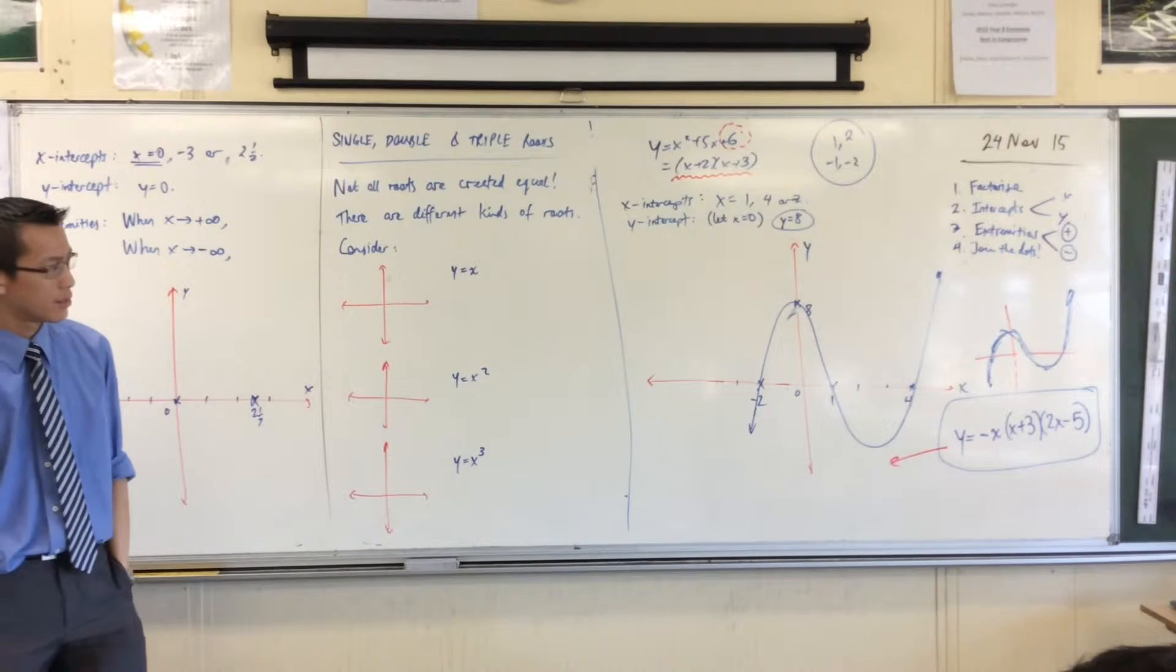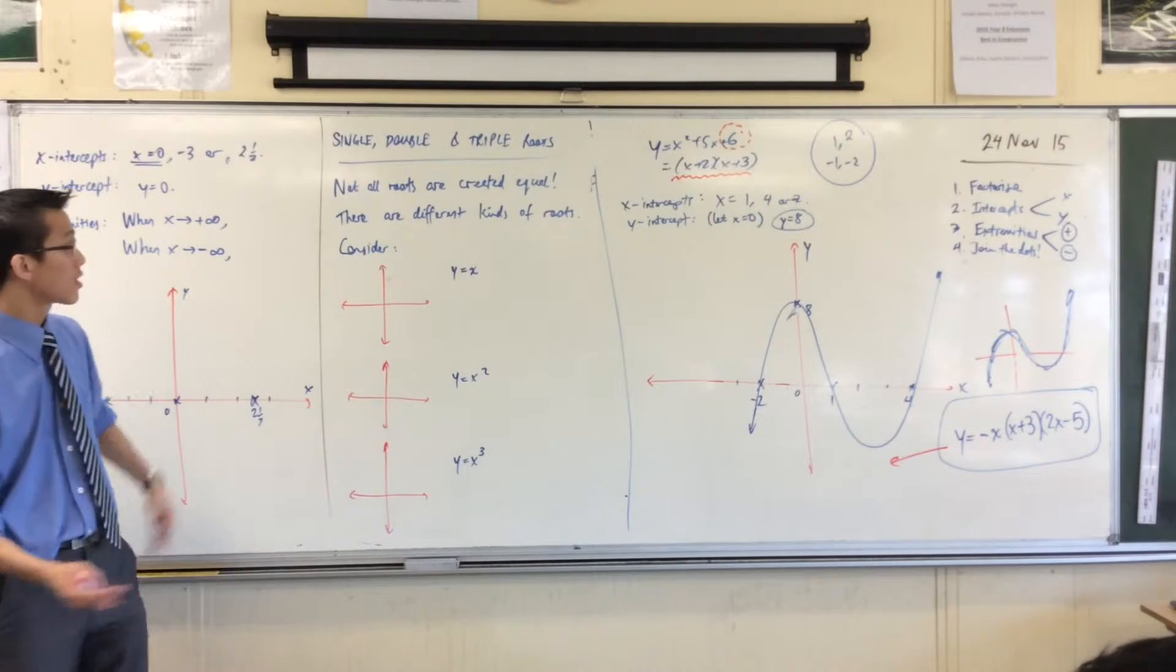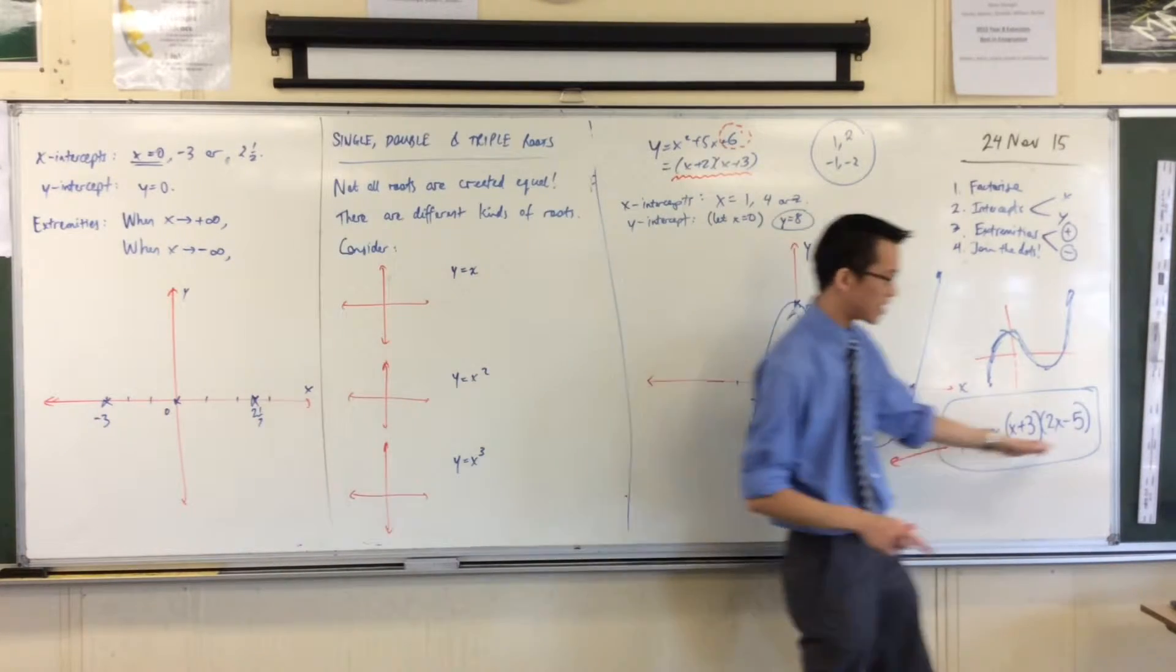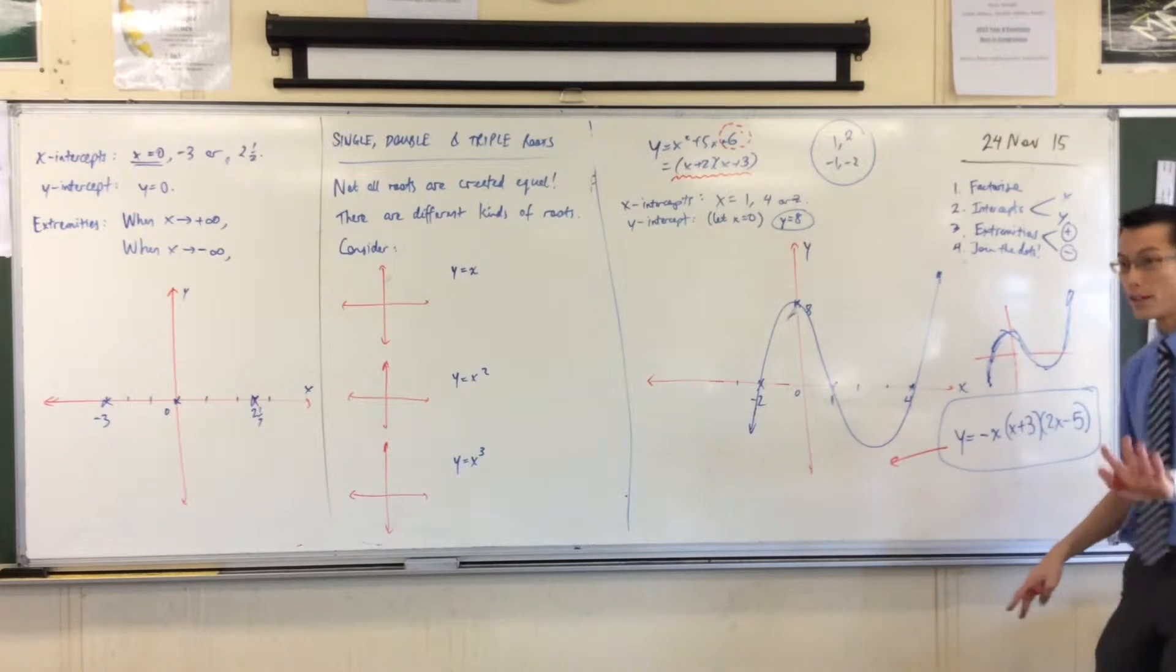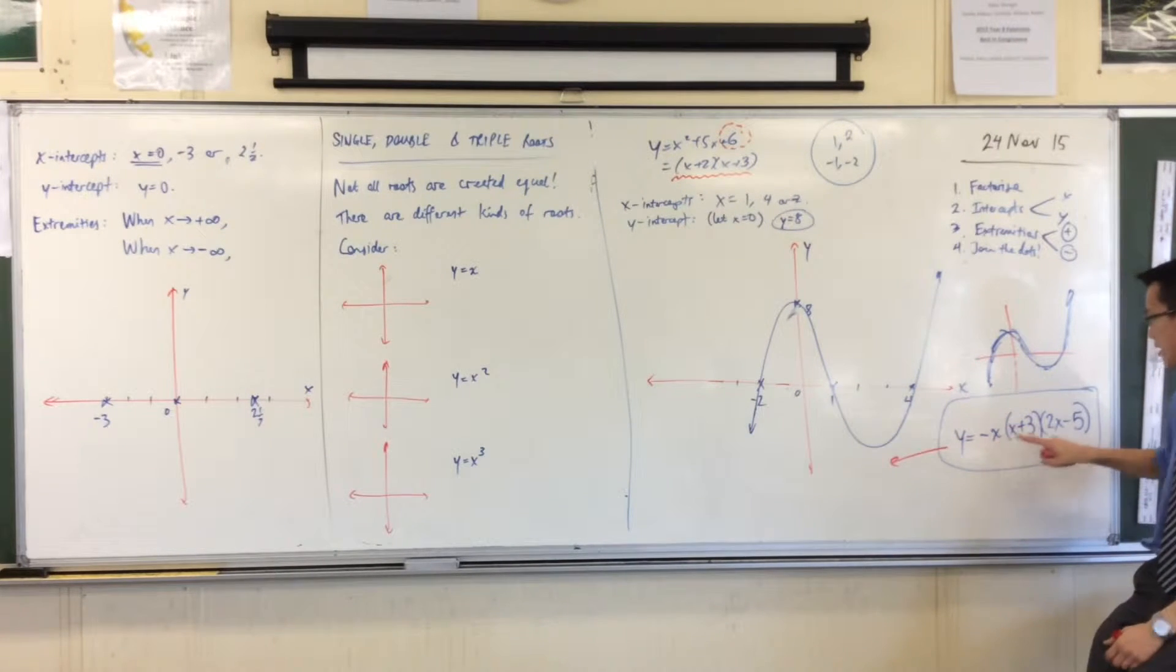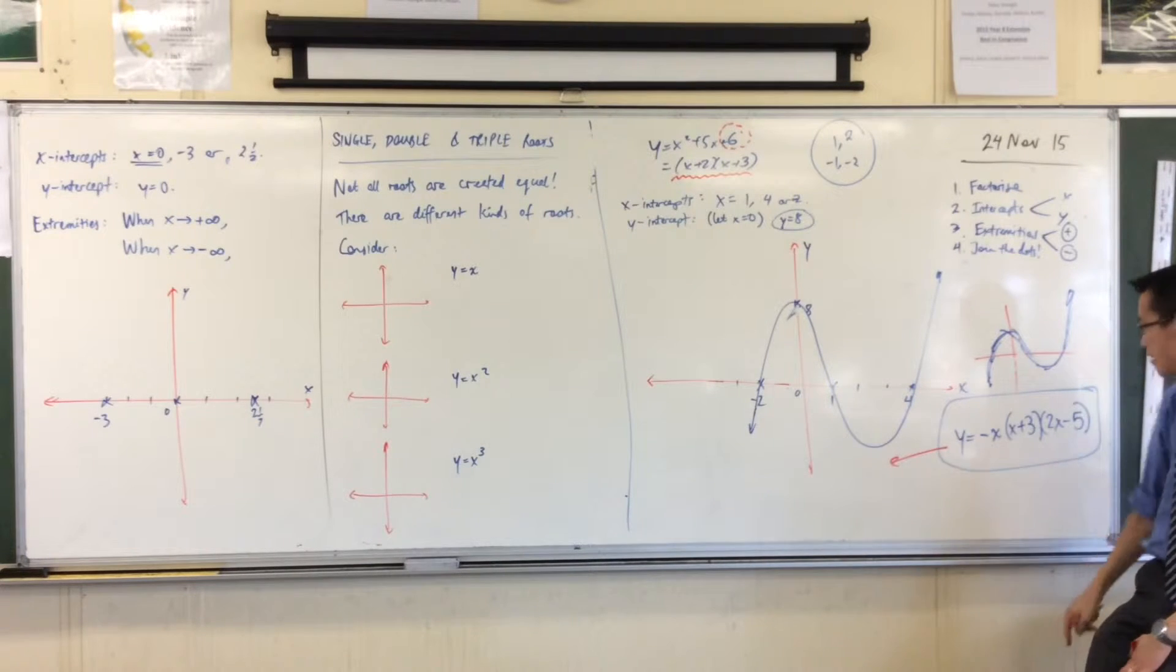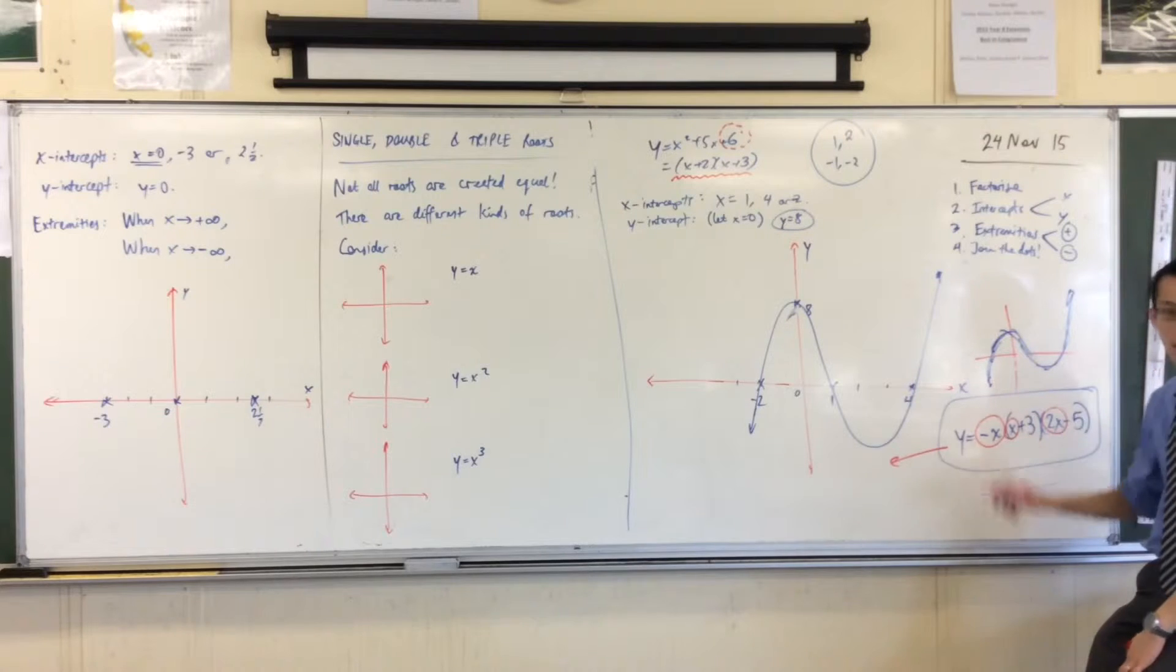So when I expand this, I'm actually not going to worry about most of the terms. I just want the leading term. What's the power of this going to be? What's the degree of this graph? It's 3, they're big cubics that we're looking at. So therefore, in order to get a cubic out of this expansion, I don't have to do every single term by every single term.